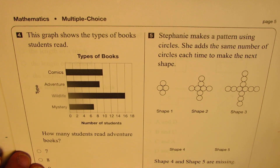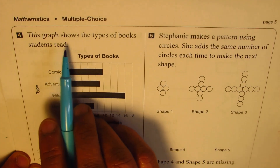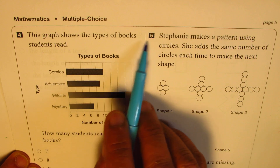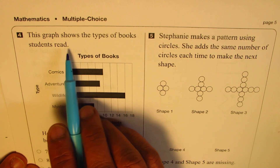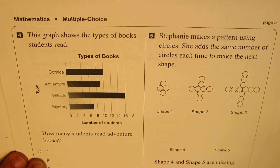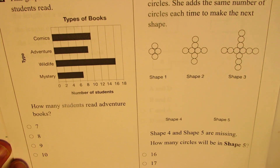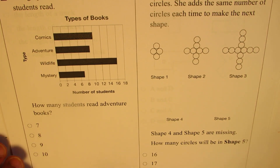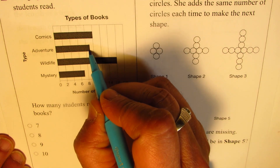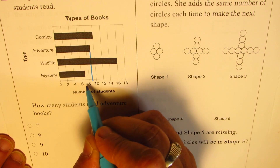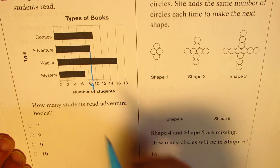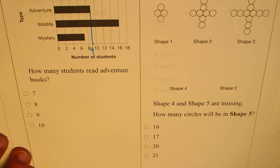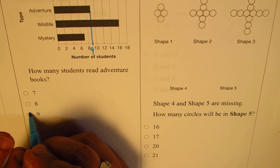Question number 4: this graph shows the types of books students read. The question for us is how many students read adventure books? So let's figure this out — that is the adventure books bar. It is between 8 and 10, so it is 9. The option given to us confirms this, so we'll fill in 9 to get the right answer.